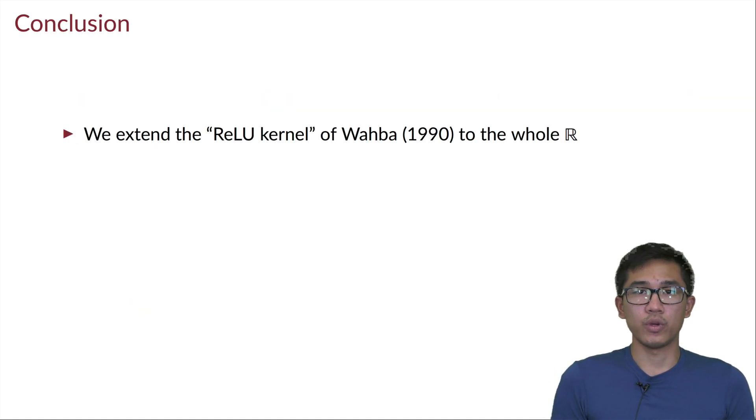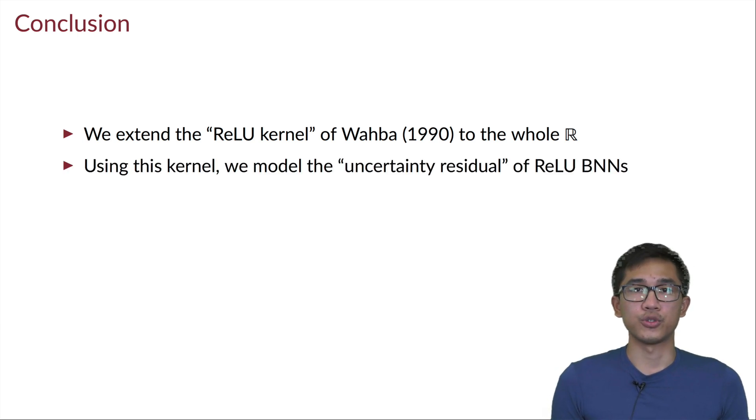So to conclude, we have extended the cubic spline kernel to the whole real line and we call it the double-sided cubic spline kernel. And we use this kernel to model the uncertainty residual of a Bayesian ReLU network.